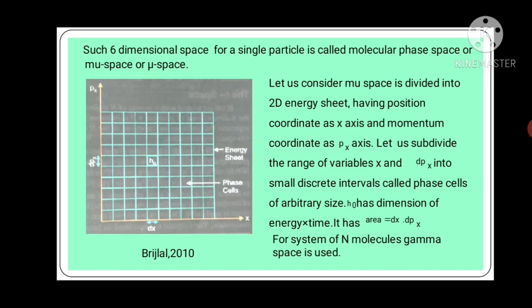Such a six-dimensional space for a single particle is called molecular phase space or mu space or μ-space. See this figure. Let us consider mu space is divided into 2D energy sheet having position coordinate as x-axis and momentum coordinate as px-axis. Let us subdivide this range of variables x and dpx into small discrete intervals called phase cells of arbitrary size. Take one cell h₀. h₀ has dimension of energy into time. It has area dx into dpx.